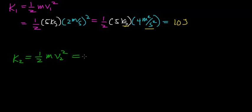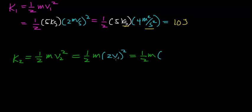Now we came up with a relationship between V1 and V2: we said that V2 was equal to 2 times V1, the initial velocity. Substituting that in, this works out to be one half the mass — which remains the same — times 2 squared, which is 4, times V1 squared.